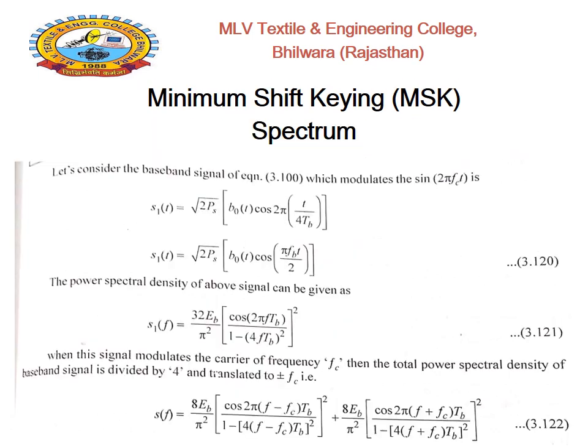The next PPT represents the expression-wise representation of the MSK spectrum, which is defined in the frequency domain. Consider the time domain expression S1(t) = √(2Ps) · B0(t) · cos(2πt / 4Tb). Taking the Fourier transform of S1(t) gives S1(f) in the frequency domain. The result, equation 3.121, is S1(f) = (32b / π²) · [cos(2πf·Tb) / (1 - (4f·Tb)²)]², which is the frequency domain representation.